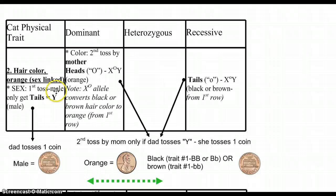The first toss is by the dad only. So if dad throws a tails, the second toss is going to be by the mom only if the dad throws a Y. Or the tail. So dad, if you throw a tail, the mom needs to then toss her coin. If that's the case, and mom gets a heads, the kitten will be orange. In this case, since the Y is coming from dad, that's the tail, and then the mom, if she throws a heads, then what it's going to do is what happens, since it's X-linked, is that allele, that orange, will convert black or brown to orange. So that orange color will cover up black or brown. And we're going to be looking at that from that first row of first tosses.